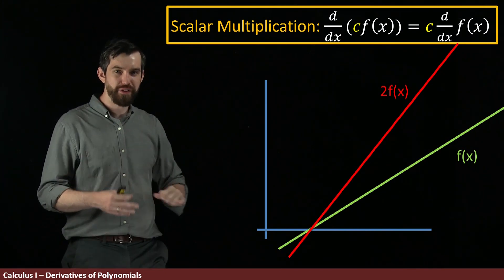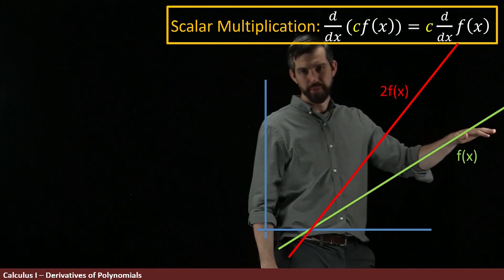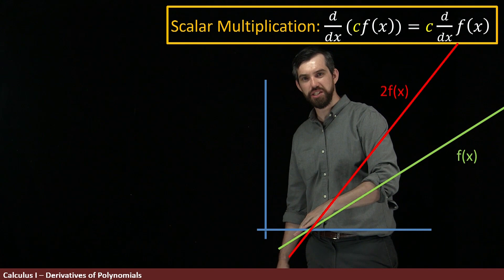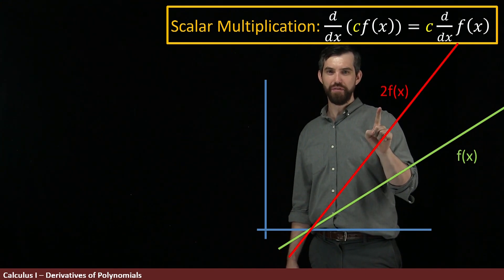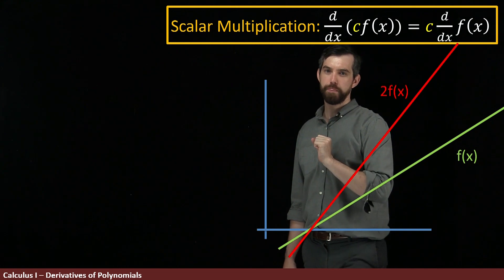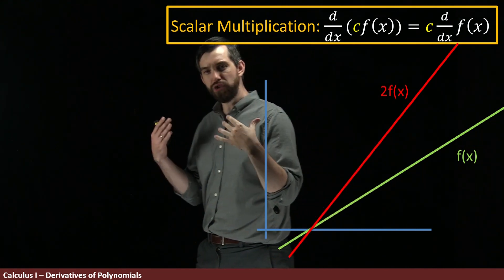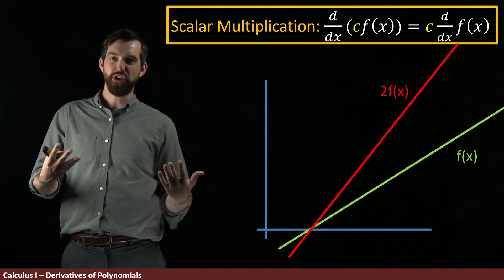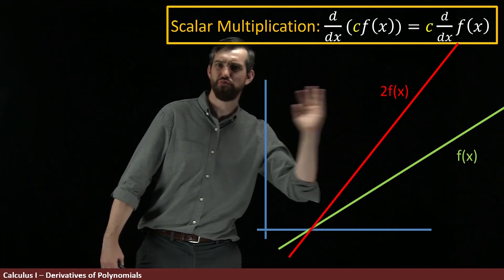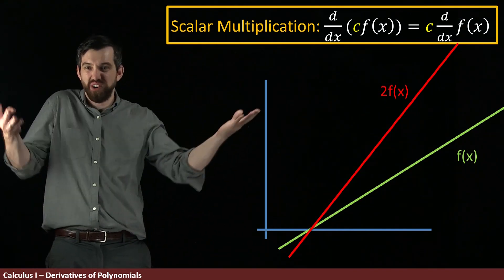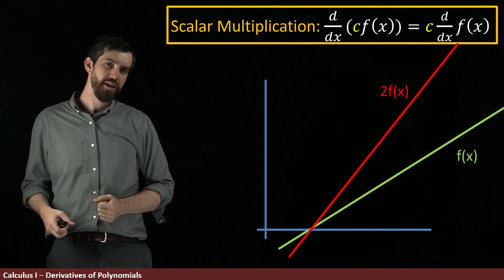So, what I'm going to have is a graph. I've got some function f of x here. And then I have a different function, which is twice f of x. So, in other words, I've got a c value of 2. Now, remember, a derivative represents the slope of the tangent line. But for straight lines, the tangent line and the function, they're just right on top of each other. So, a tangent line and the function are the same thing.